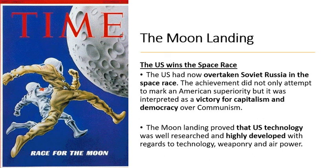There's an interesting photo from Time Magazine depicting an American astronaut and a Russian cosmonaut literally having a race towards the moon. Landing on the moon in July 1969 established that the US had overtaken Soviet Russia in the space race. The achievement not only marked American superiority but was interpreted as a victory for capitalism and democracy over communism — showing the world that democracy, freedom of speech, and capitalism were superior to the totalitarian state of communism in Russia. It also proved that US technology was superior, highly developed, and well-researched.